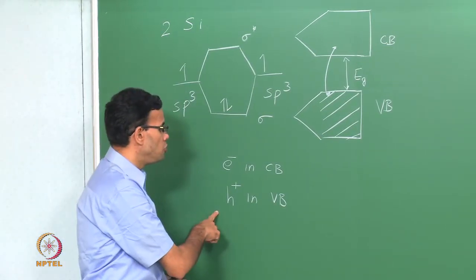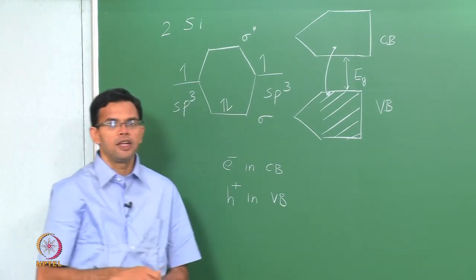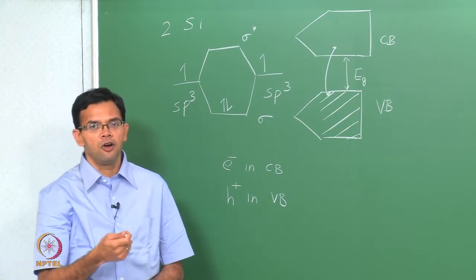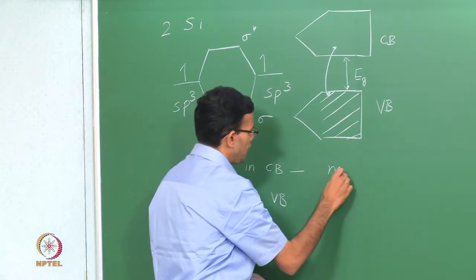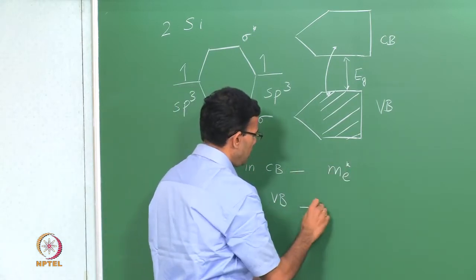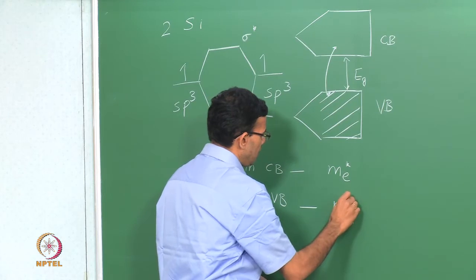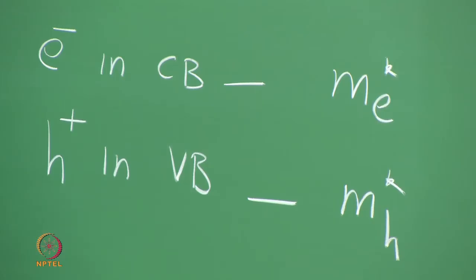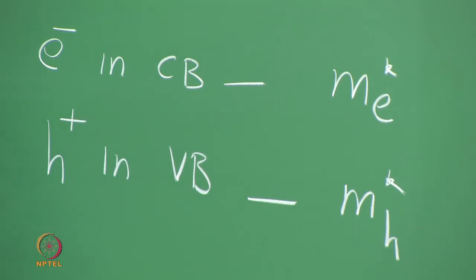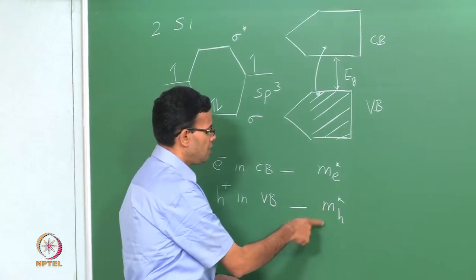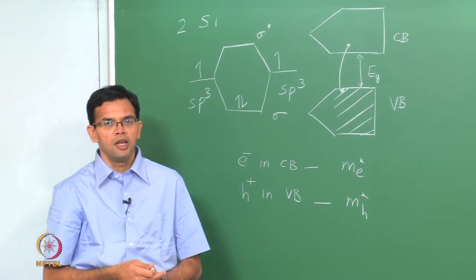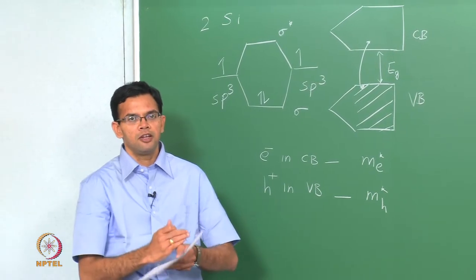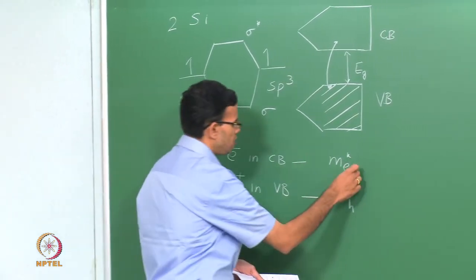When these electrons and holes move, they also see the effect of all the other atoms in the lattice. So we introduced the concept of the effective mass, Me* and Mh*, and these take into account the effect of all the atoms in the lattice. Just a reminder: we do not mean that the mass of the electron is actually changed. The mass still remains the same, but we club the effect of the atoms into this concept of effective mass.